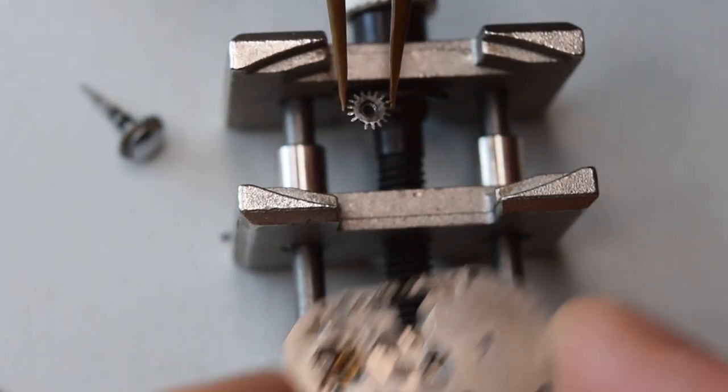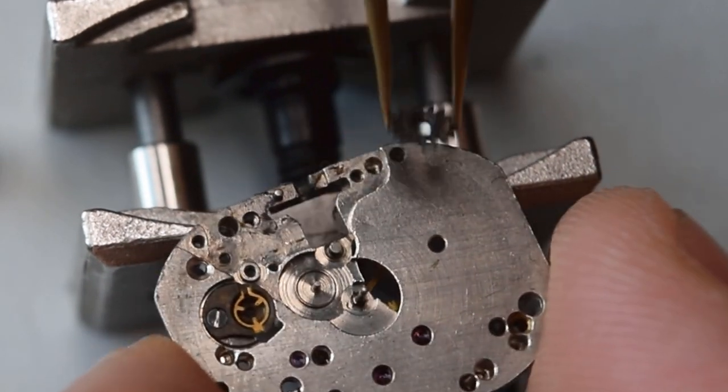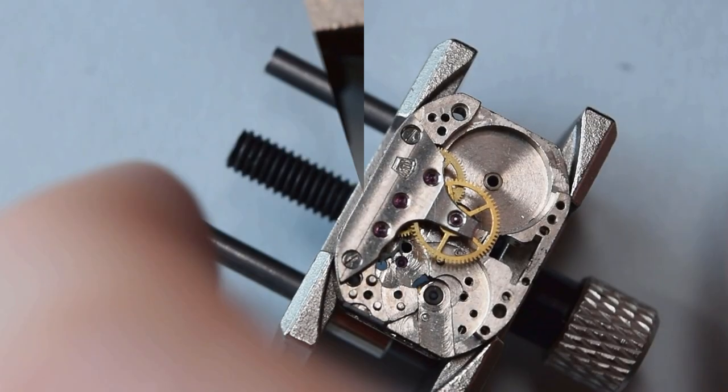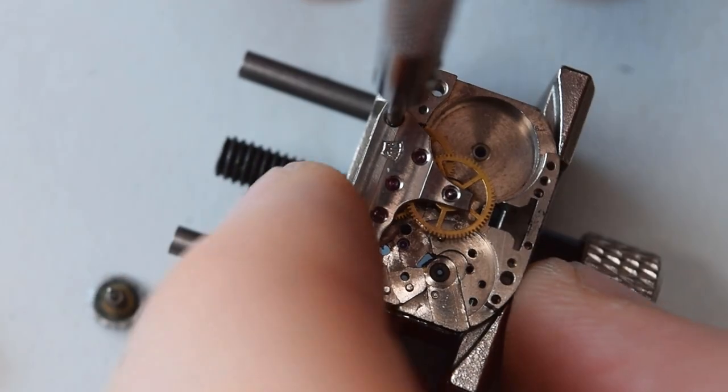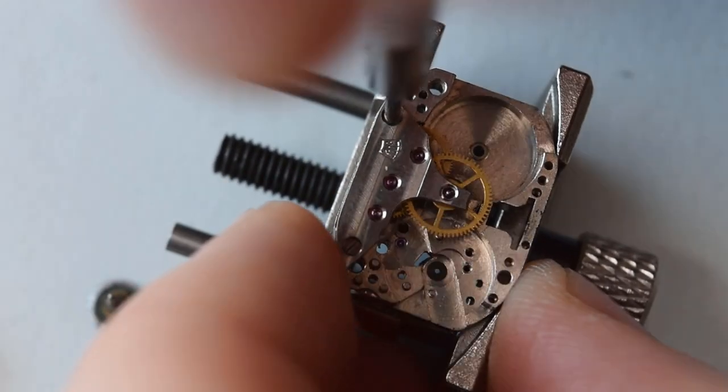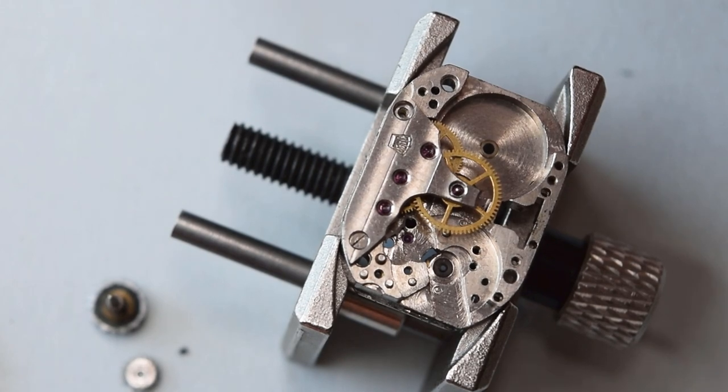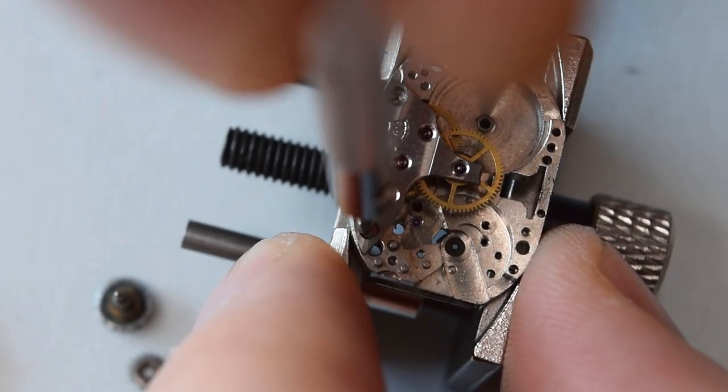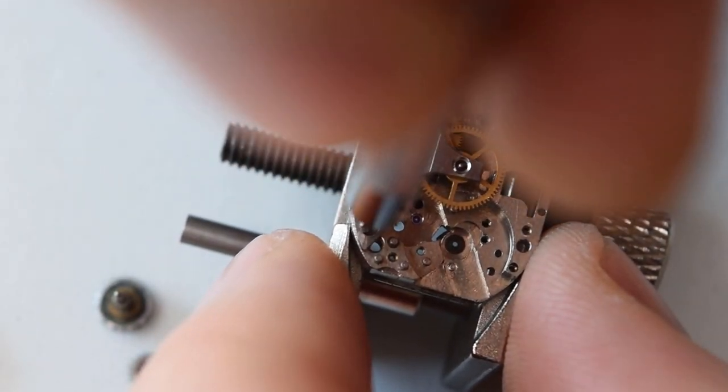Here we have the winding pinion, which is unfortunately broken, so we have to find a replacement for that. I think there won't be any problem—I have some spares from this movement, so I'm pretty sure I will find something.